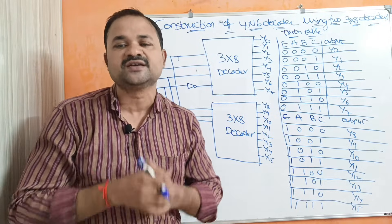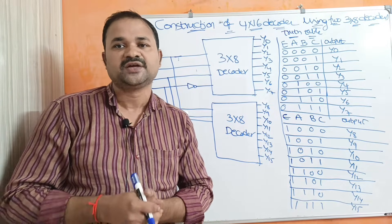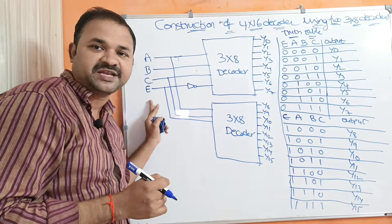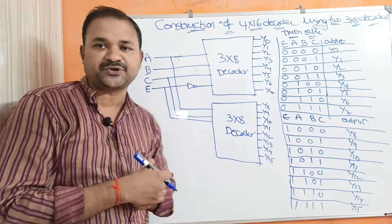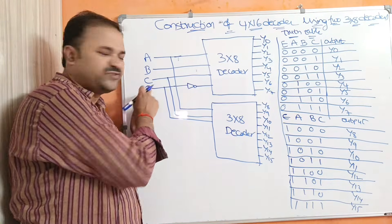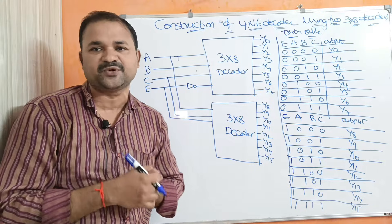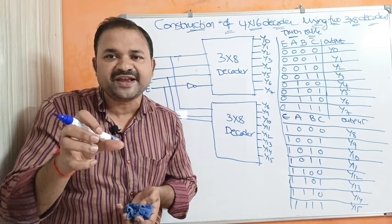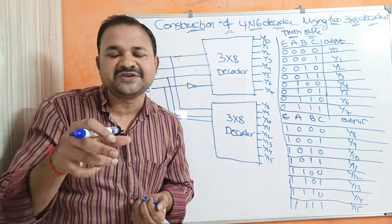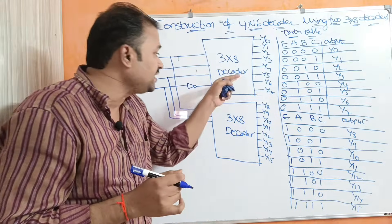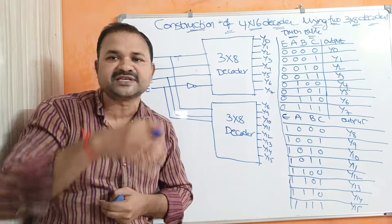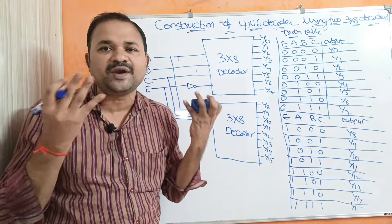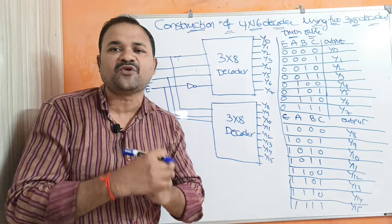Why do we need that extra input? Because we are constructing a 4 by 16 decoder, which requires 4 inputs. That extra input is the enable input. If the enable input is active — that is, if enable is 1 — then only the decoder will produce output. If the enable input is 0, then the decoder does not produce any output, irrespective of the other inputs.